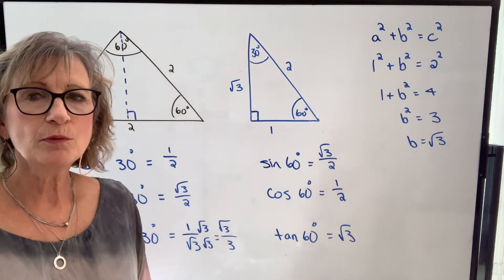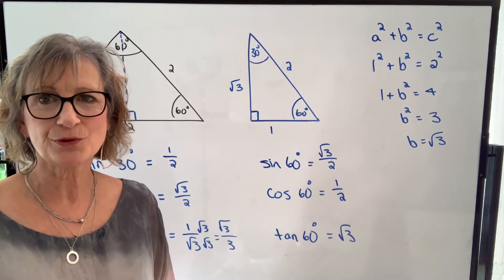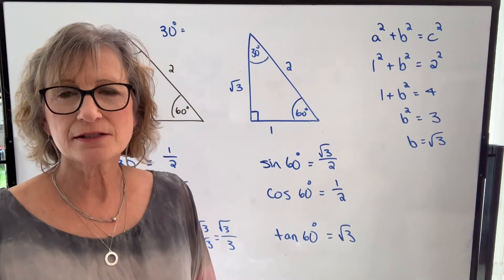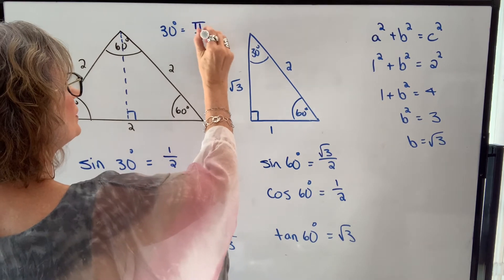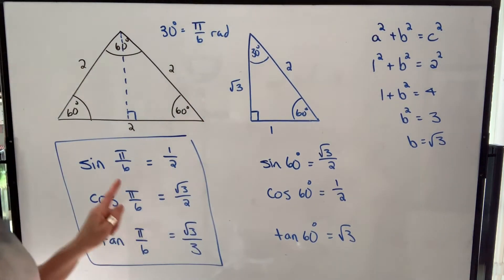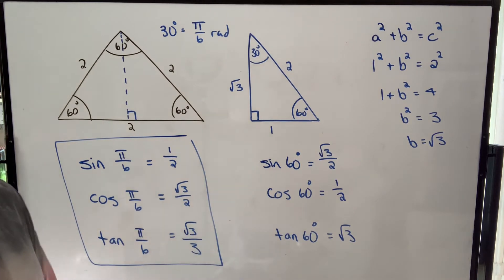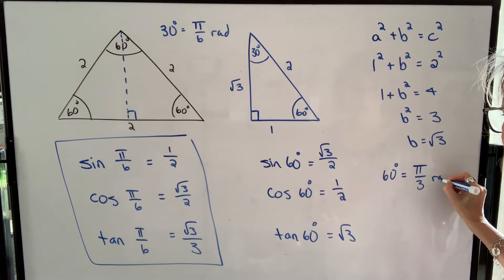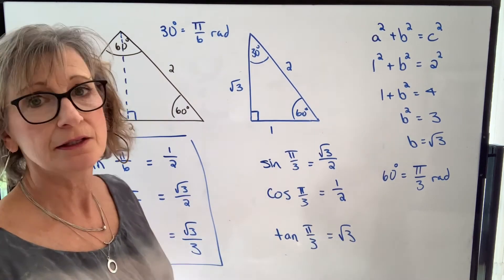You'll also need to know these trig functions when your angle is expressed in radians. Thirty degrees is pi over 6 radians, so we can write pi over 6 in place of 30 degrees for all those special trig functions. Sixty degrees is equivalent to pi over 3 radians, so our three trig functions with 60 degrees, expressed as pi over 3 radians, would be those same values.